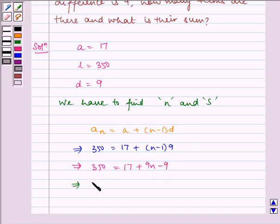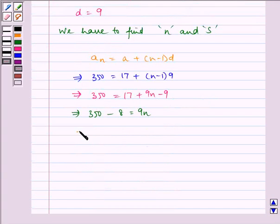Which implies 350 minus 8 is equal to 9N, which implies N is equal to 342 by 9. Now, this gets cancelled by 38. So, it implies N is equal to 38.